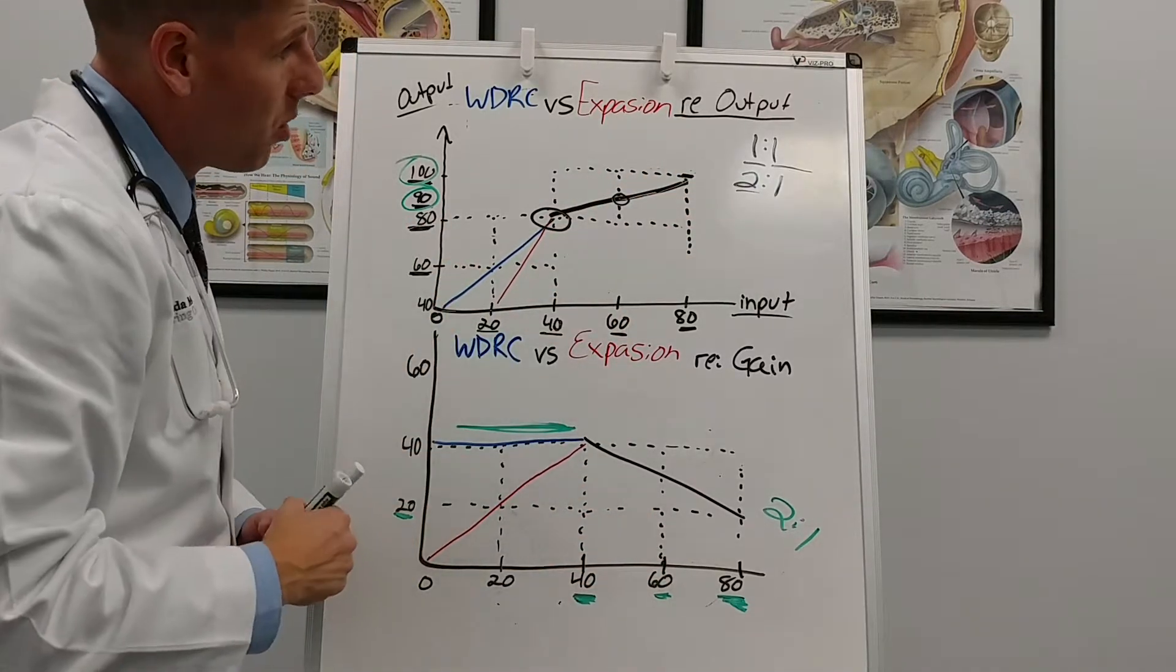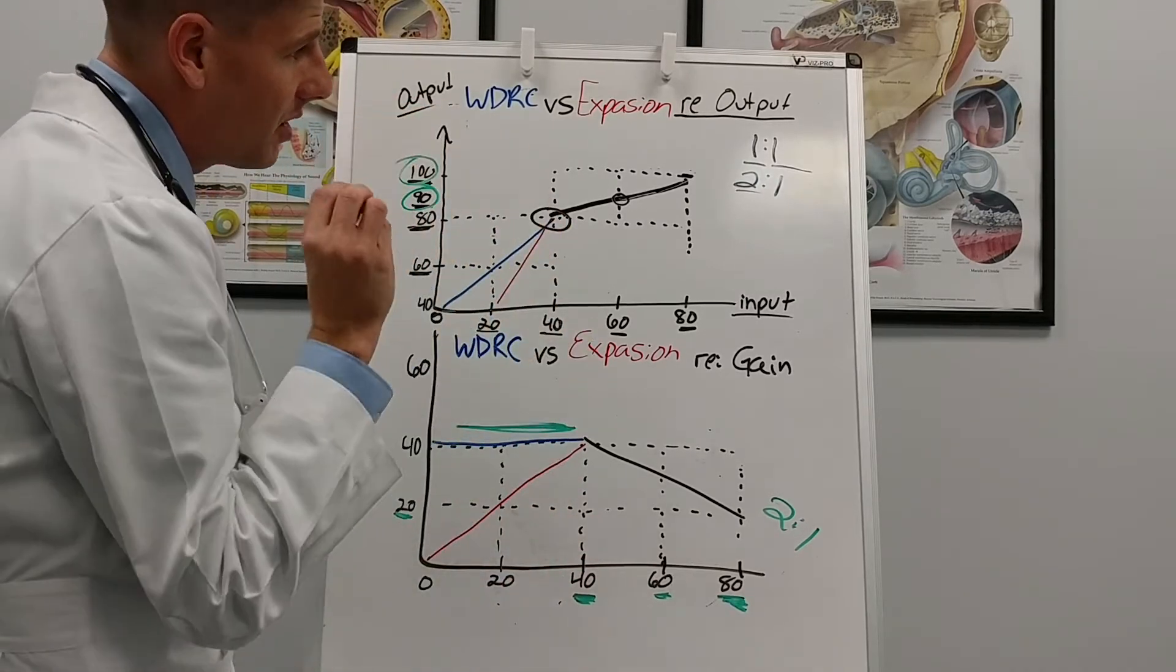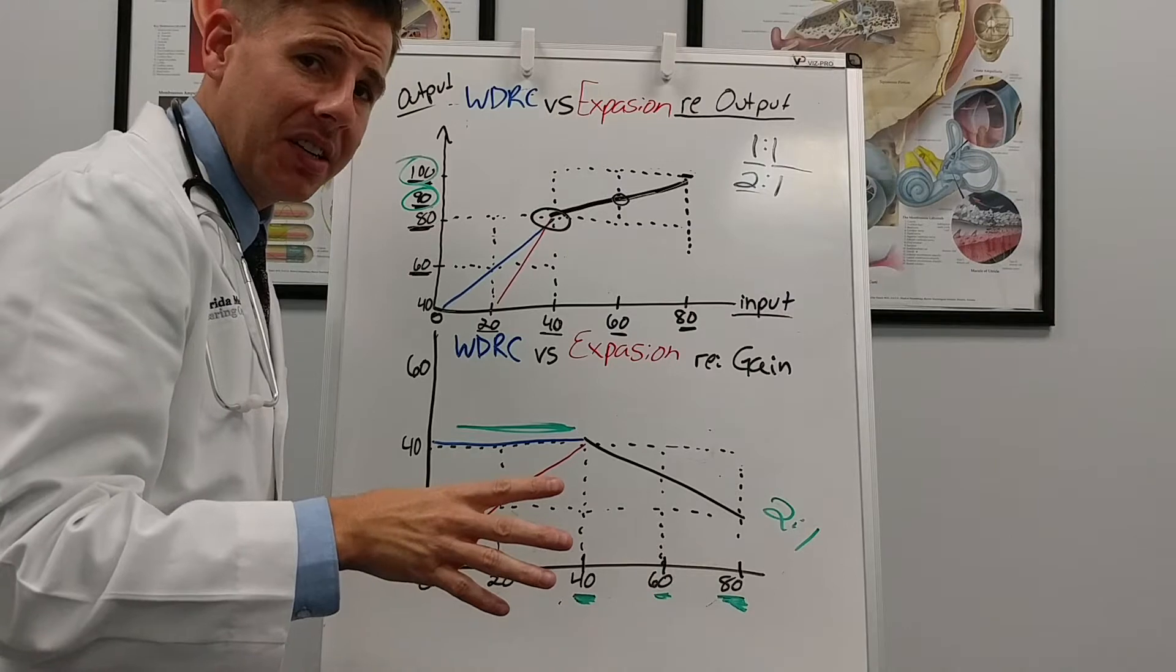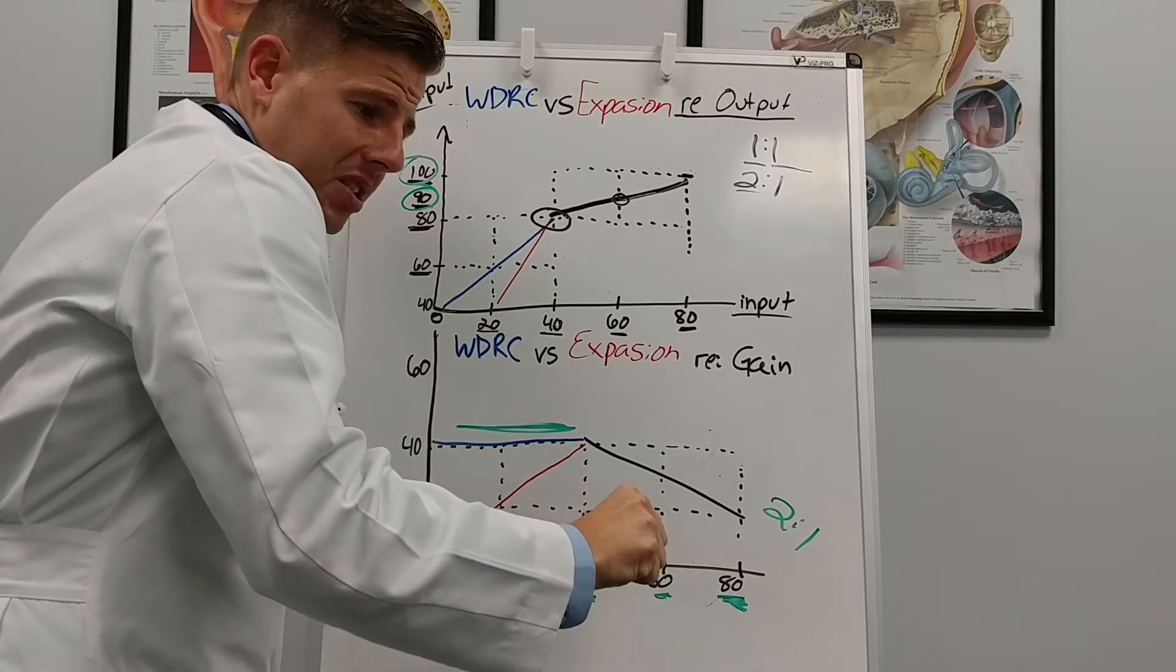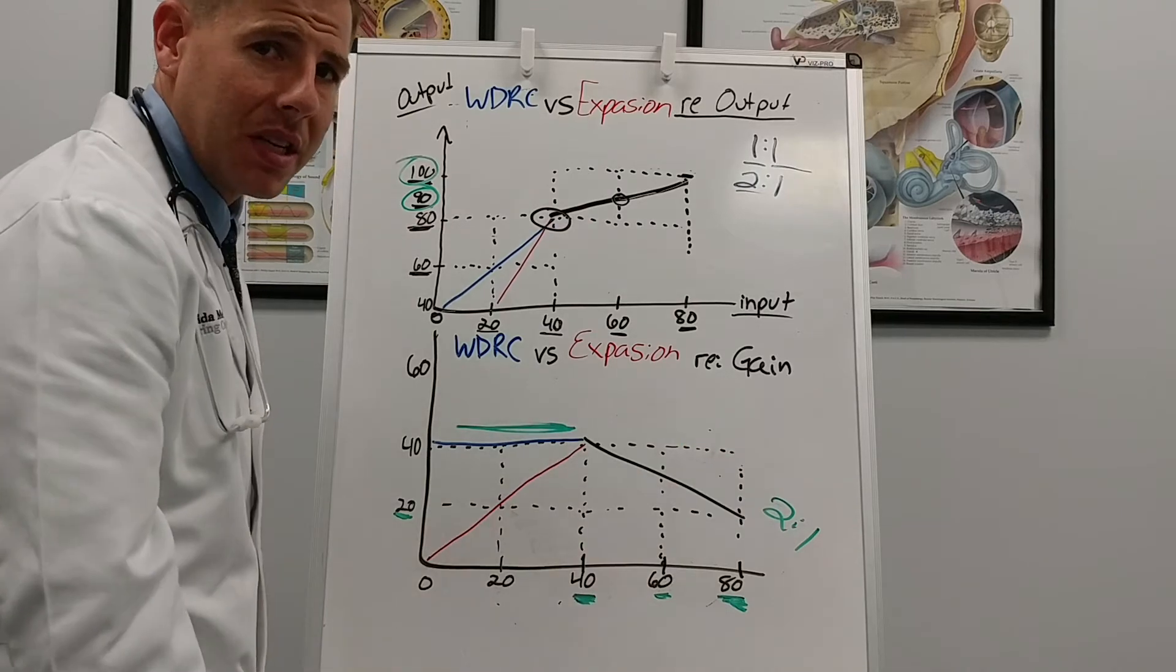I can increase it even more to a three to one or a four to one and all that means is that for every four decibels that comes into the hearing aid I'm going to compress it so I only allow one decibel out into the patient's ear.